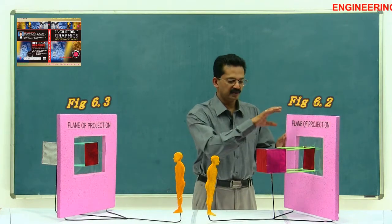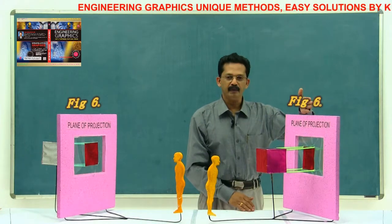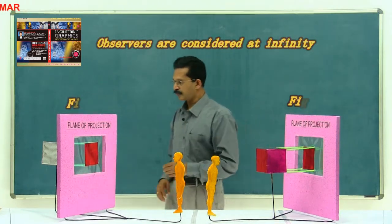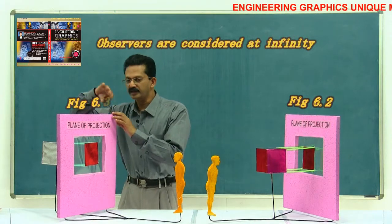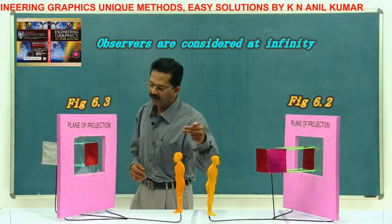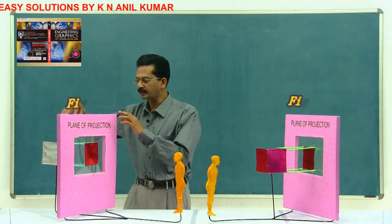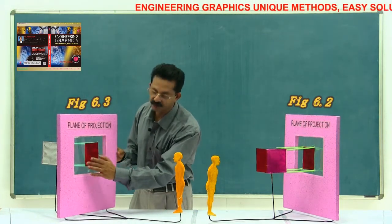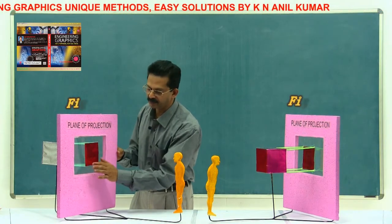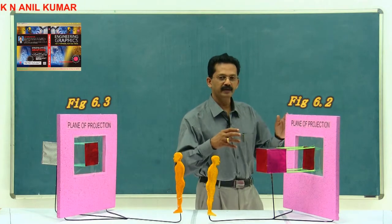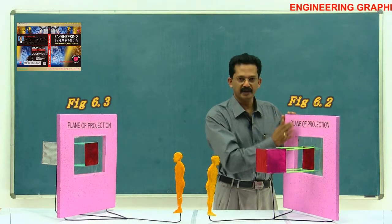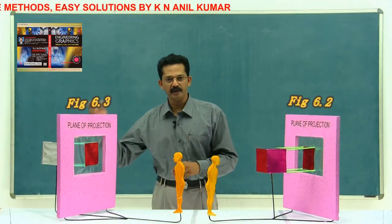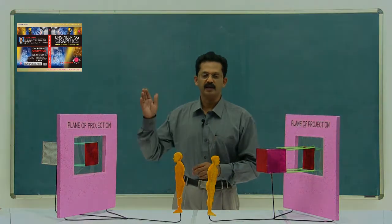In the first case, the object is in front of the imaginary plane — this is that plane, this is the object, and this is the observer viewing the object. In the second case, the imaginary plane is between the observer and the object, which is behind the imaginary plane. In both cases, whether the object is in front of or behind the imaginary plane, we get the projection on that same imaginary plane.